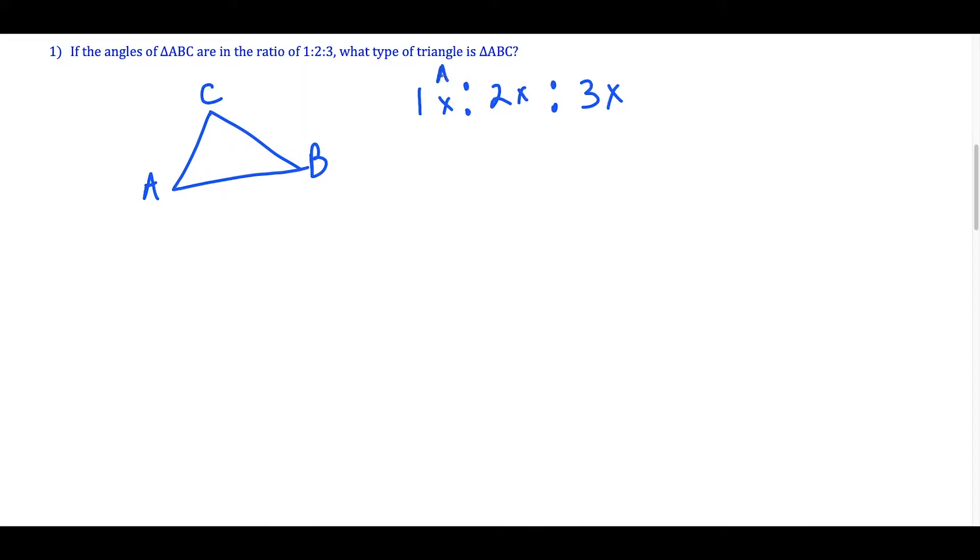Since this represents triangle ABC, I'm going to throw 1X next to A, 2X next to B, and 3X right next to C here inside the triangle. So what we're going to use from here is the idea that the sum of the three interior angles of a triangle is 180 degrees.